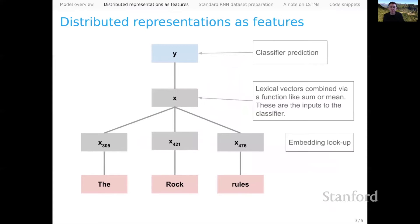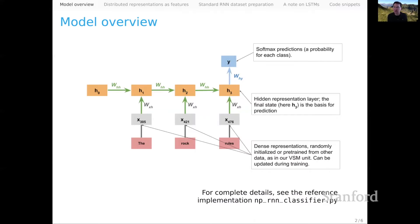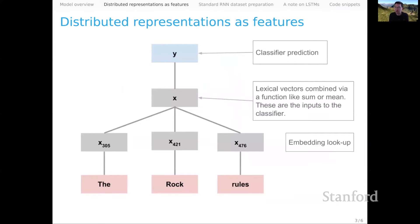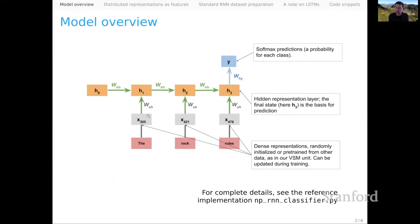I want to remind you from the previous screencast that we're very close to the idea of distributed representations of features. In that mode, we look up each token in an embedding space — just as we do for the RNN — but instead of learning a complicated combination function with learned parameters, we simply combine them via sum or average as the input to the classifier. The RNN can be considered an elaboration of that: instead of combining vectors in a simple way like sum or mean, we now have vast capacity to learn a much more complicated combination that is optimal with respect to the classifier we're trying to fit. If sum or mean happened to be exactly the right function for your data, the RNN would have the capacity to learn that too — but we favor RNNs because they can learn a much wider range of complicated custom functions.